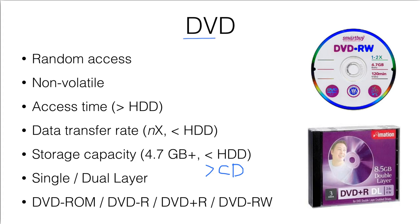Next, we have the DVD, so it supports random access. The access time is quite long as compared with the hard disk, and the data transfer rate is also measured in terms of X, but this X is different from the X in CD.